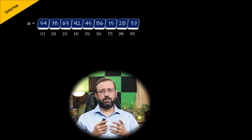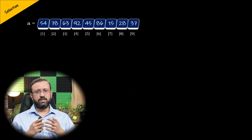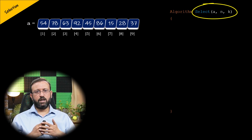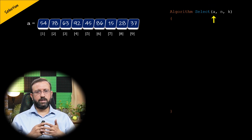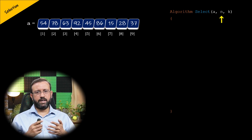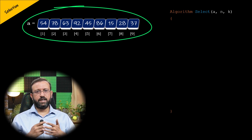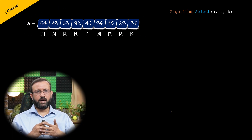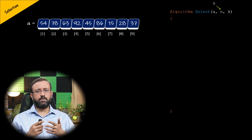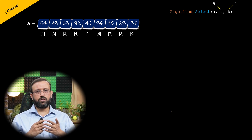Having seen how to perform the partitioning, we will look at the selection algorithm. We will call this algorithm as select. This algorithm takes three parameters: the first parameter is the array A where the elements are stored, the second parameter is n, the number of elements in the array, and the third parameter is k, that is the kth smallest element we are trying to find. Consider these elements in the array: the first argument is A, the second argument n is nine because there are nine elements, and the third argument k, let's say four, meaning we are trying to find the fourth smallest element.